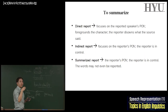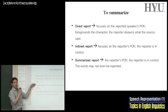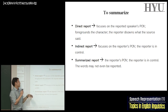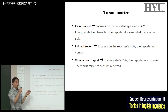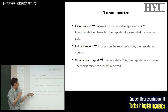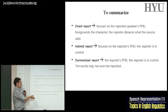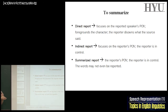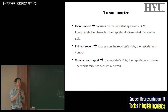To sum up: we have direct reporting, in which you keep the exact wording as is. We have indirect reporting, in which the reporter focuses on the original content but not the form — content is important but not the form. And summarized report, which shows the reporter's greatest power to control — the reporter is in control of everything and the words may not even be reported. It's the reporter's interpretation of the original situation.